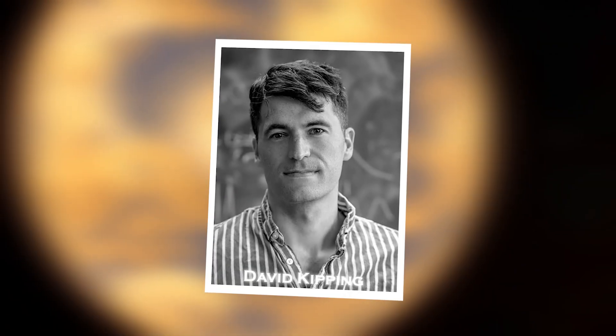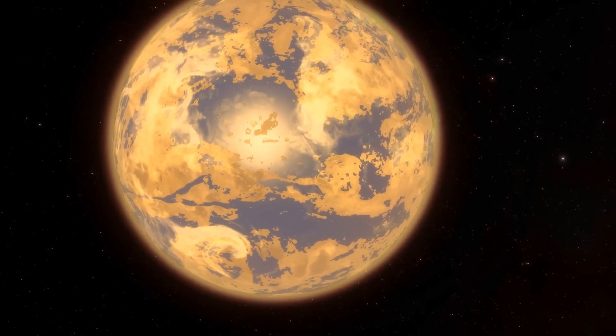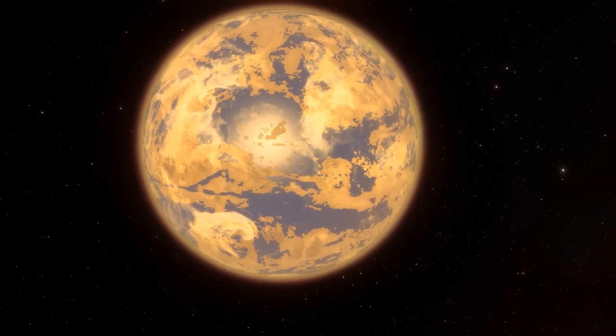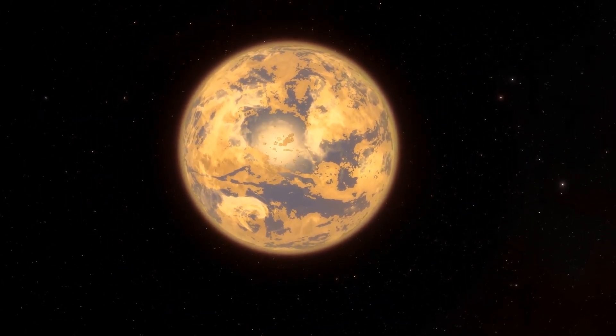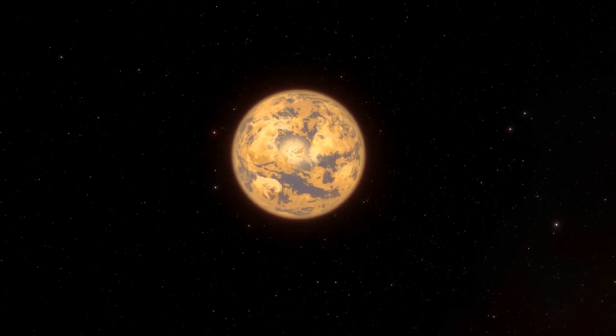David Kipping, an astronomer at Columbia University, characterizes the exoplanet Proxima b, where the urban lights have been sighted, as a celestial body with peculiar heating patterns that differ from those observed on other planets.